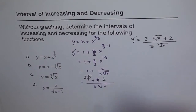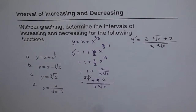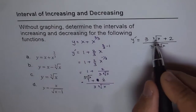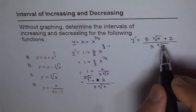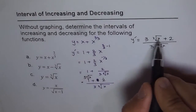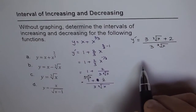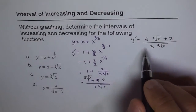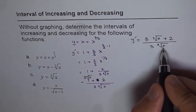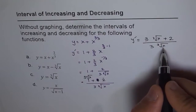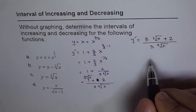So y dash equals 3 times cube root of x plus 2, all over 3 times cube root of x. That is our derivative. The points where this derivative is 0 are where the numerator is 0, and it is undefined where the denominator is 0.